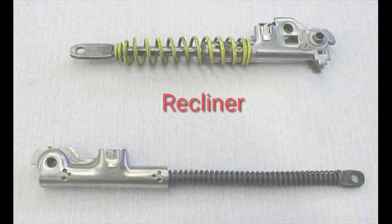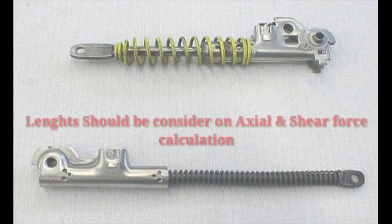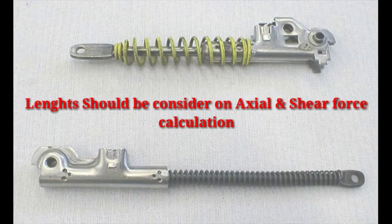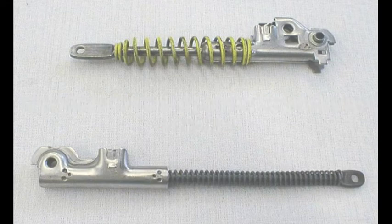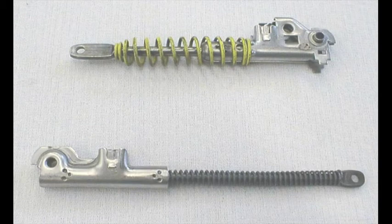You can see the recliner in the image. It is a standard part. During designing of the system, we calculate the axial and shear forces, and according to that, we decide the recliner. It is a bought-out part that comes from the supplier, so we have to choose various standard recliner parts according to the seat requirements — for example, Metal and Mechanisms Recliner. The recliner is critical to the seat system performance and must be designed to withstand loads applied during typical and non-typical operations.